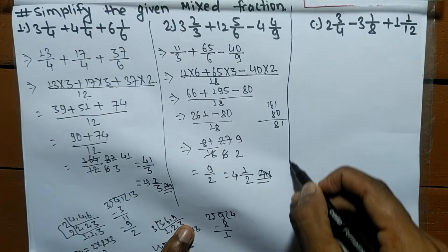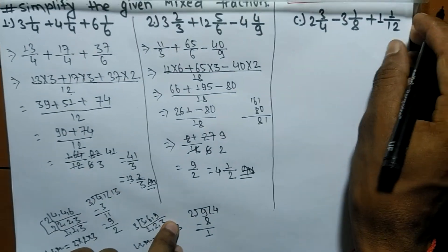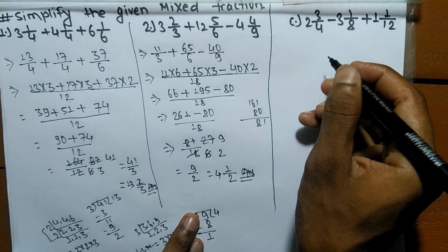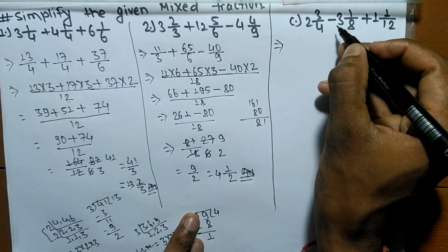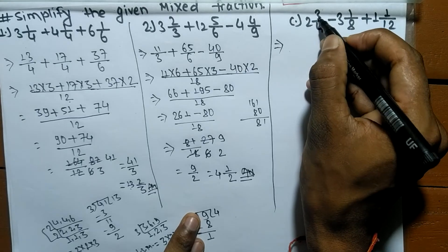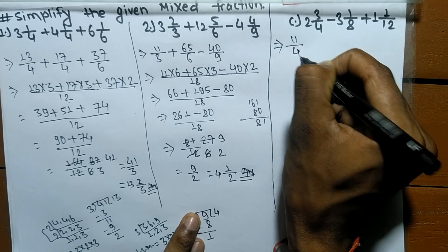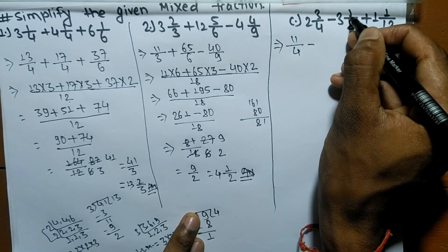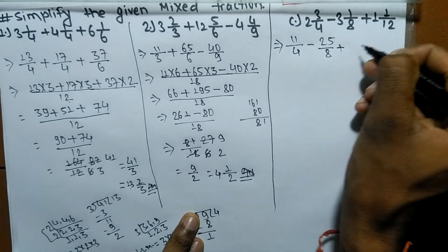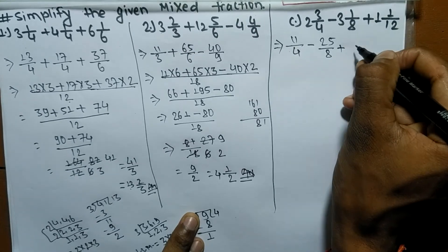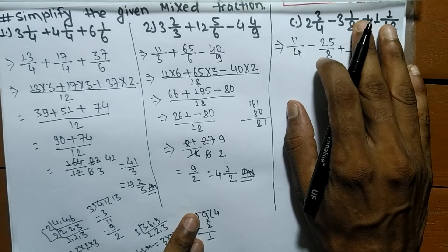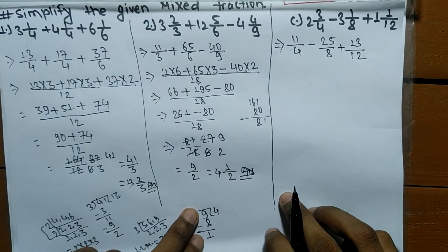The last problem is 2 whole 3 by 4 minus 3 whole 1 by 8 plus 1 whole 1 by 12. As usual, we first convert them into improper fractions. So 4 times 2 means 8 plus 3 means 11 by 4, minus 8 times 3 means 24 plus 1 means 25 by 8, plus 12 times 1 means 12 plus 1 means 13 by 12.